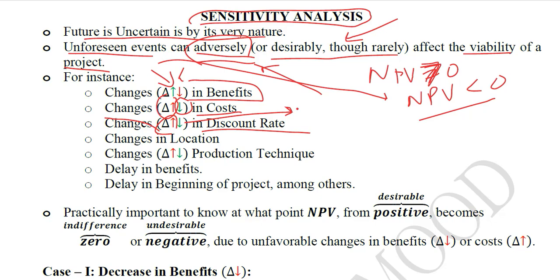Changes in the location can also affect the outcome of the project. Because if we shift a project to some other place from where it was originally planned, the outcome can be different. Due to certain factors — maybe a change in demand in the other location that we have chosen — it can affect the outcome of the project, and the climate or other environmental factors can also affect the outcome. Hence the NPV can change.